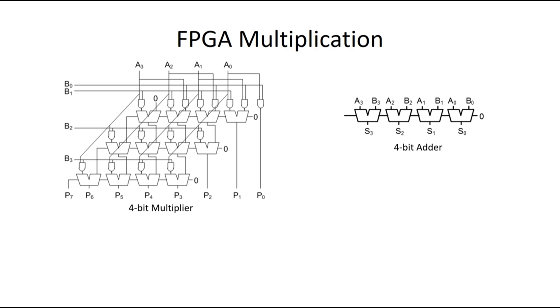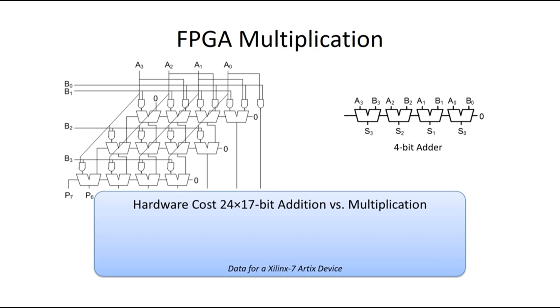And so this adds to both the latency and the area overhead of multiplication. And to give you an idea of that cost, we're going to look at the number of lookup tables required to perform a 24 by 17-bit addition versus a multiplication in a common series of FPGAs. So to perform an addition operation with this number of bits, we'd need a total of 17 lookup tables.